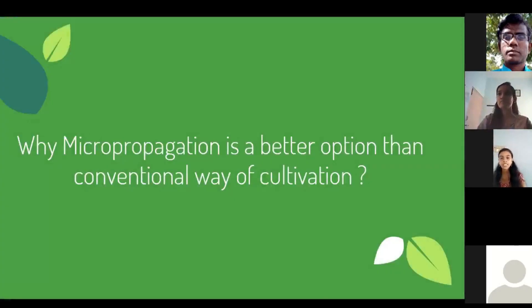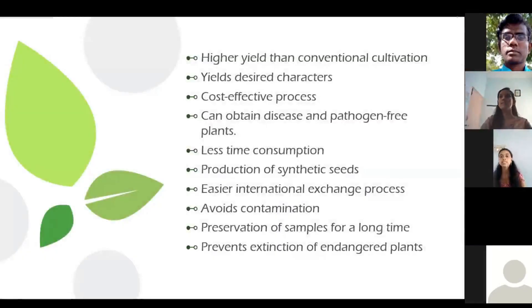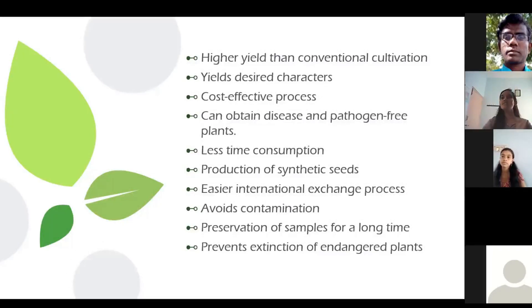Now let's get to the answer for our driving question. Micropropagation is the best technique for the production of millions of clones in one year. When it comes to conventional techniques, it takes years to produce an equal number of plants. It facilitates the growth, storage, and maintenance of a large number of plants in small spaces, which makes it a cost-effective process. This also helps to save endangered species and serves as a storage platform.